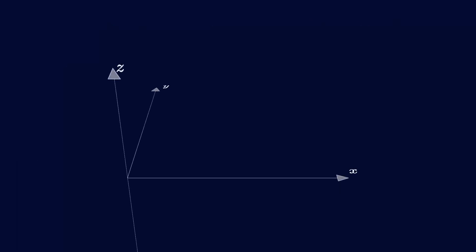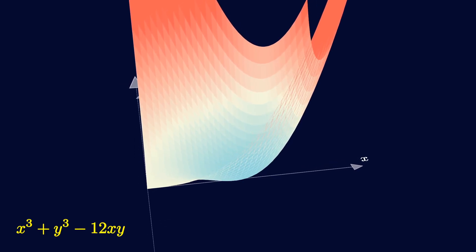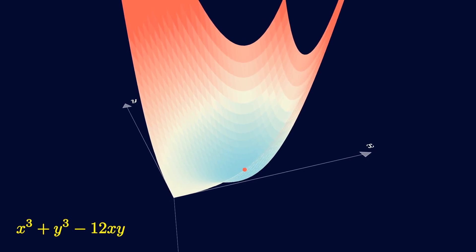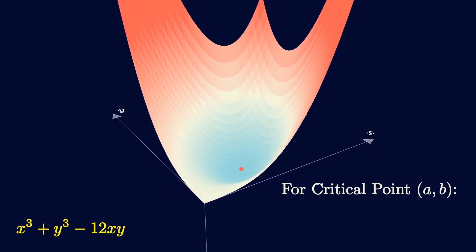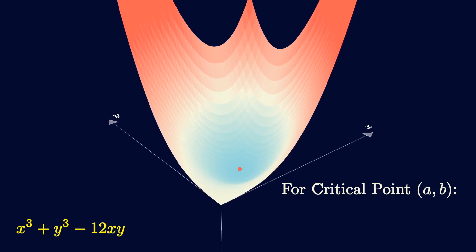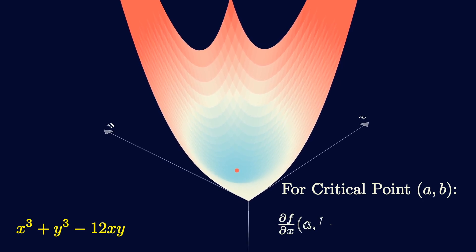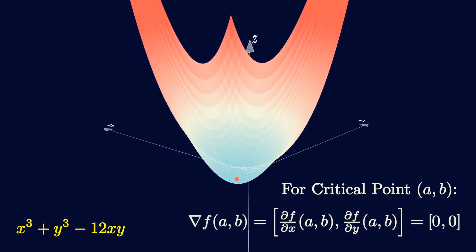Now, in real life, most functions we encounter have multiple variables. Local optima, like this local minimum here, also occur at critical points, but a critical point is defined a bit differently in higher dimensions. Instead of the derivative being 0, we need all partial derivatives to be 0, which implies the gradient vector is 0.